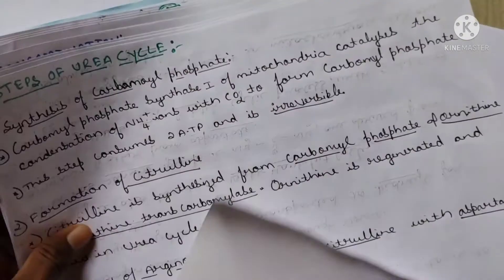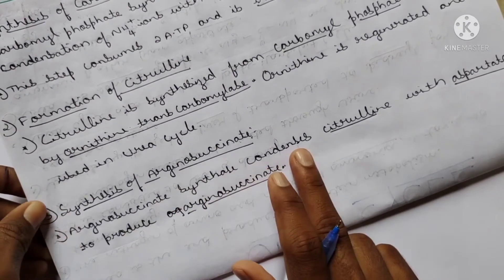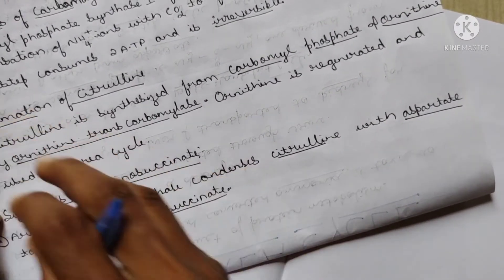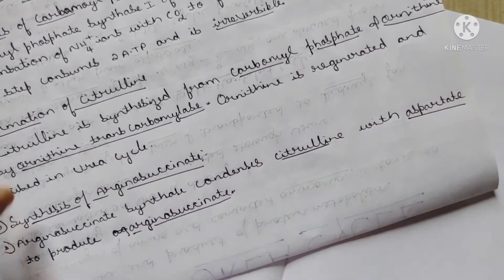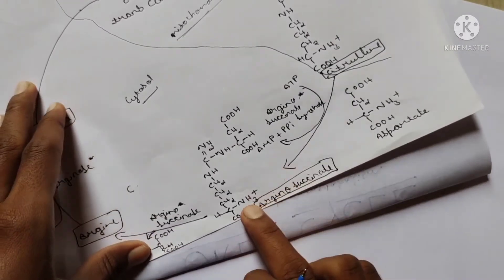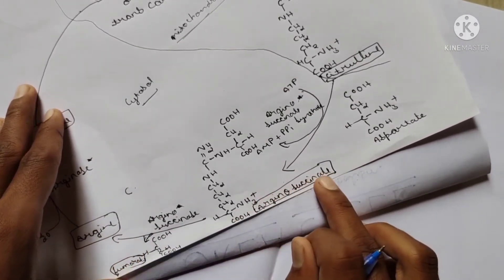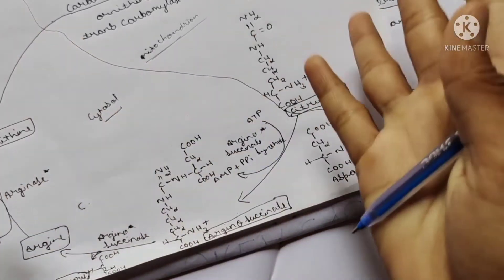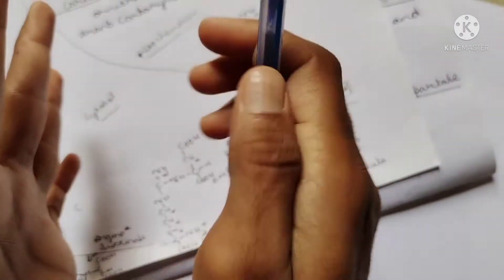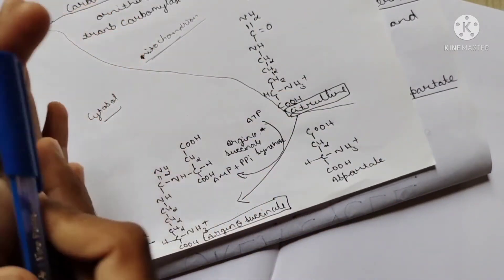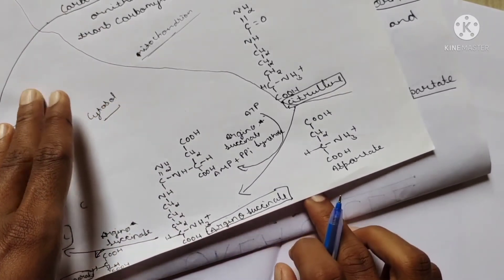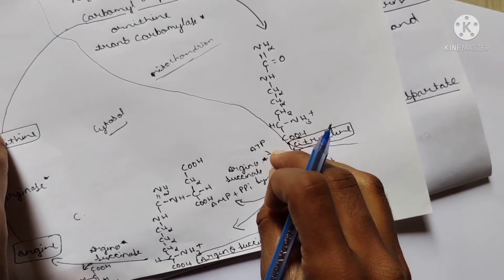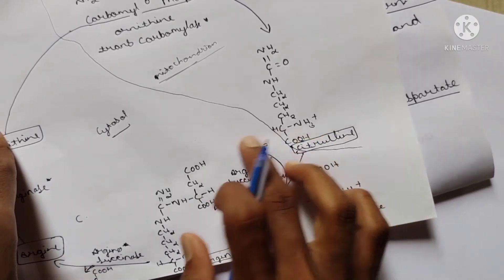The third step is the synthesis of arginosuccinate. Arginosuccinate synthetase is the enzyme which condenses citrulline with aspartate to produce arginosuccinate. One ATP molecule is utilized in this process, being converted into AMP and PPi. This is very important to remember.